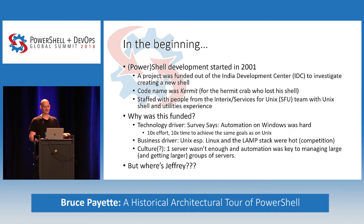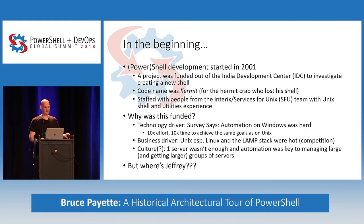Why did we do it? At the time, Microsoft was very GUI-centric and the command line was pretty deprecated. We had commissioned a survey about automation on Windows, and it returned the result that it took 10 times as long to automate something on Windows versus Unix. We also started to care a lot about Linux and Unix, which was becoming a significant competitor. And there was a cultural evolution — we were moving away from the era of one machine in your data center. The number of machines was skyrocketing, and automation was very important.